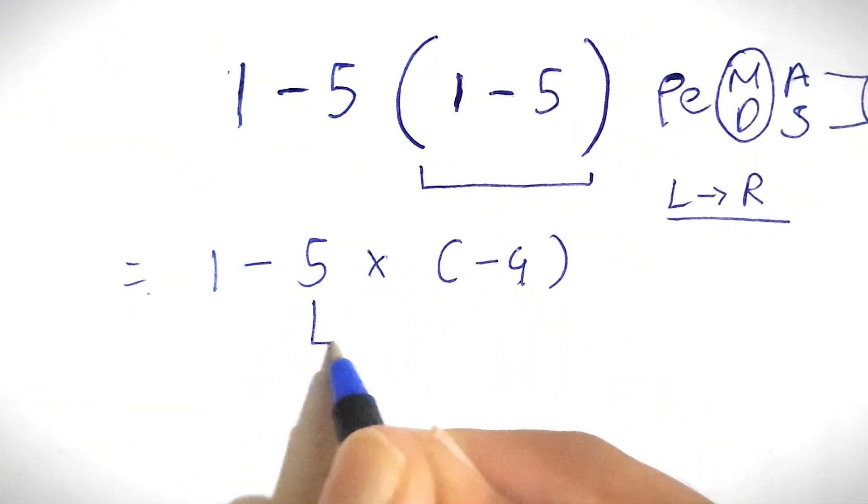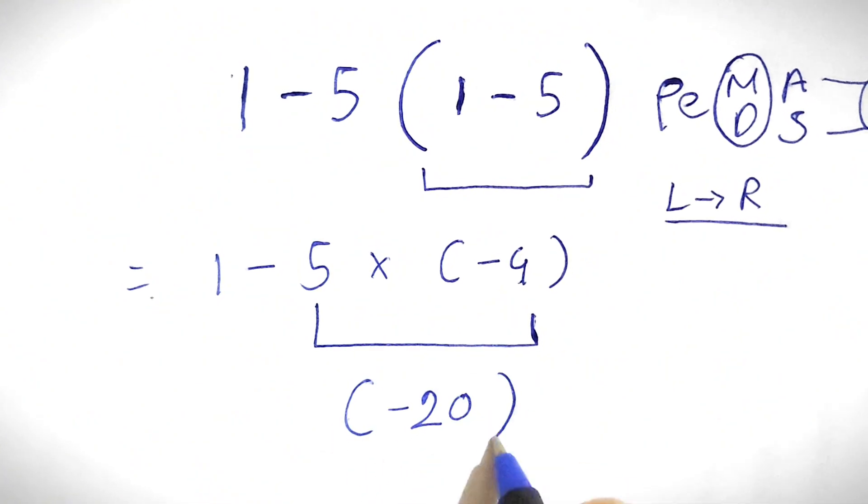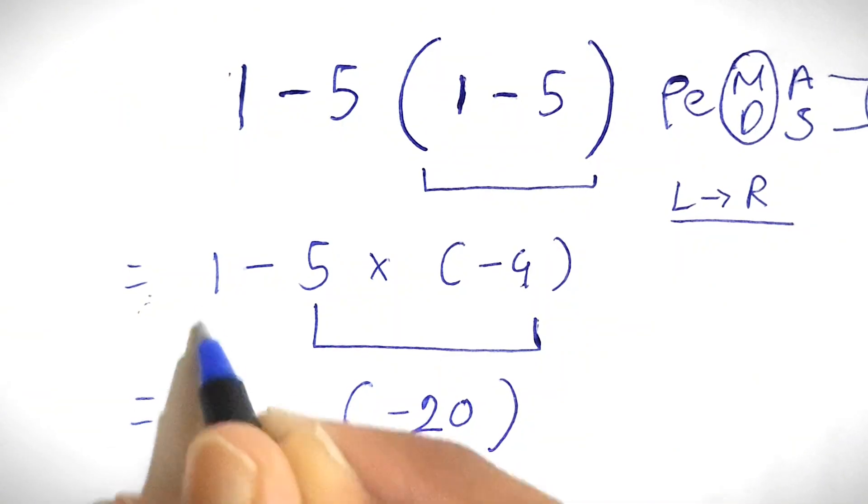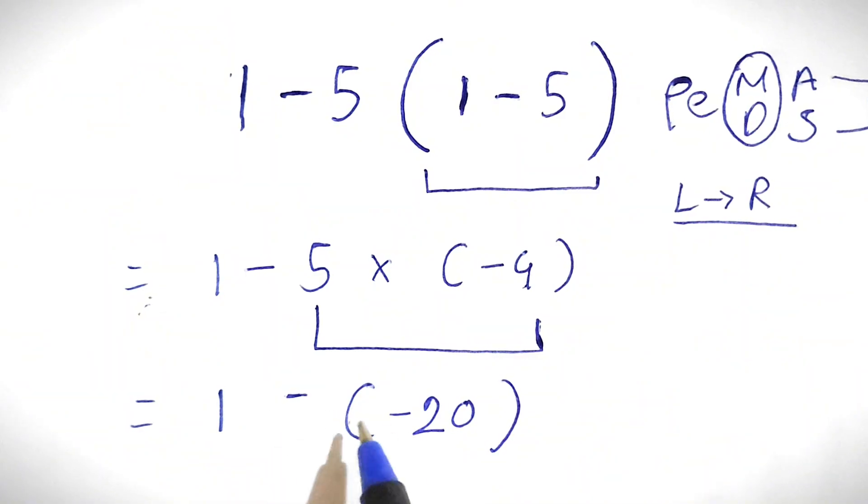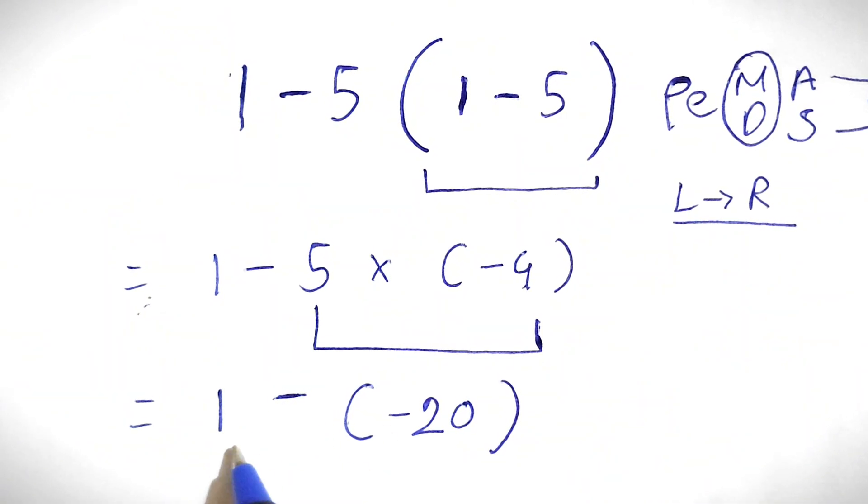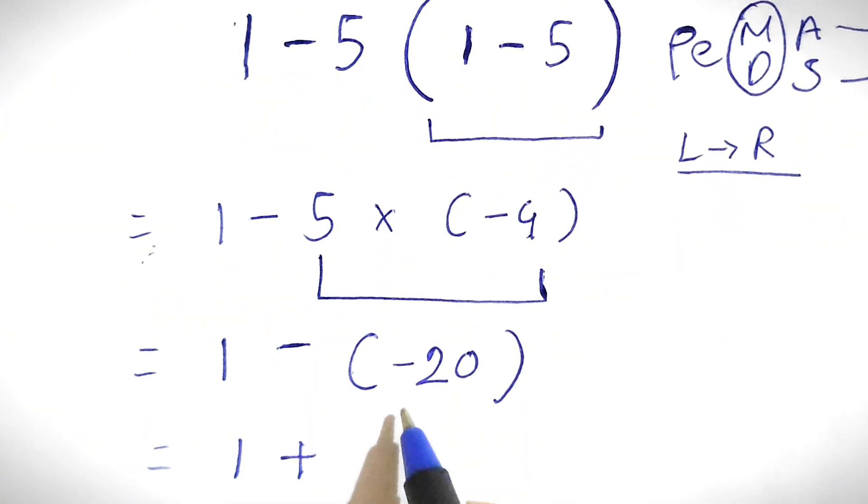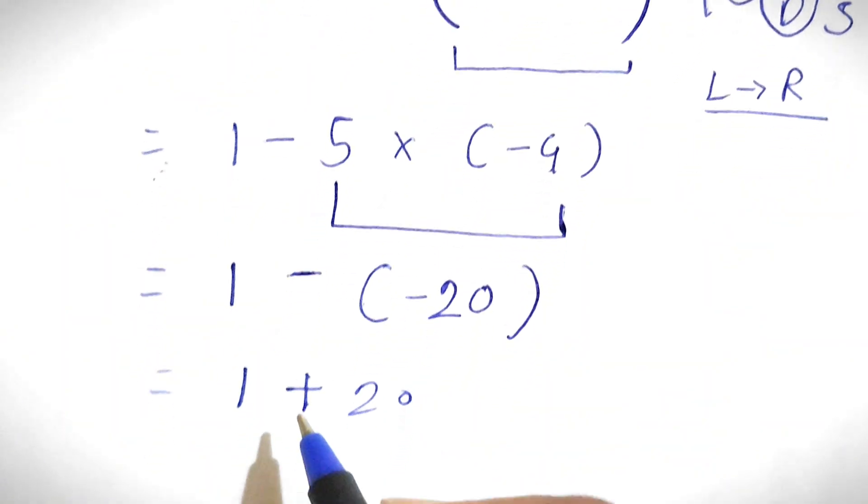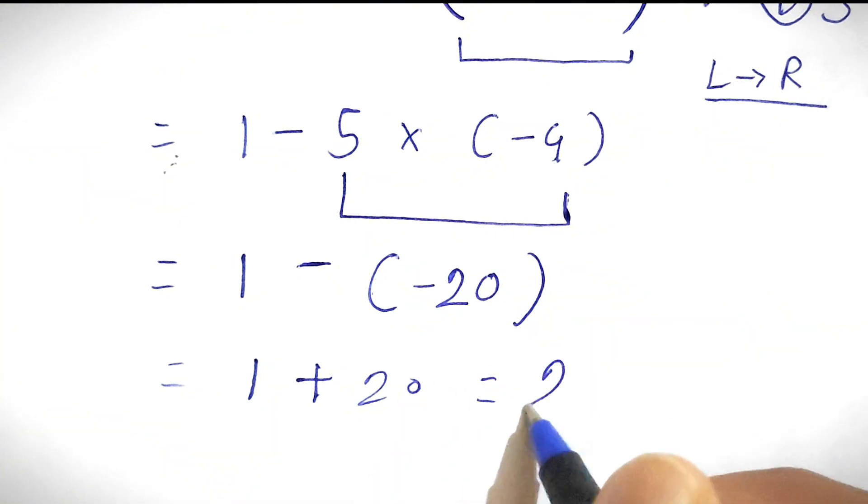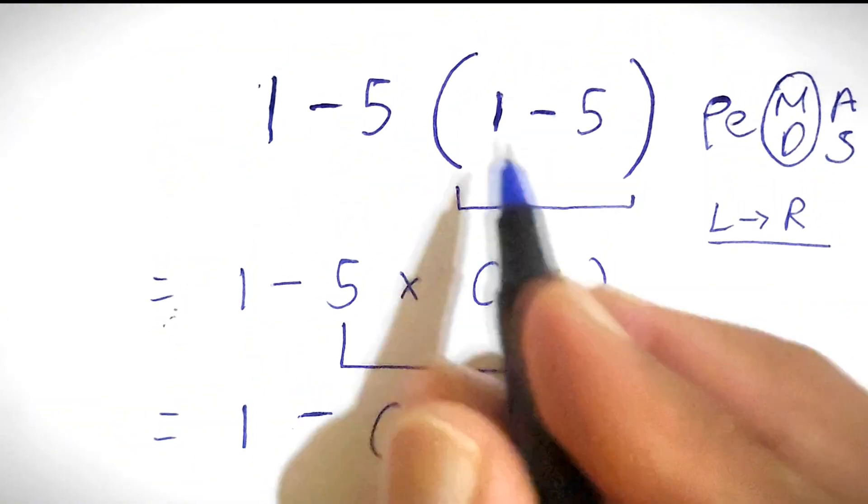Now we have 1 minus negative 20. So 1 minus negative 20 simply becomes 1 plus 20, because minus minus gives us plus. We have 1 plus 20, which gives us the answer 21. This is the final correct answer for this expression.